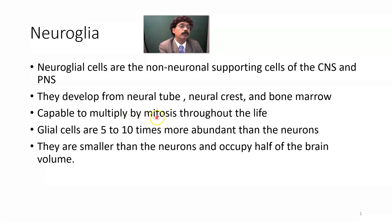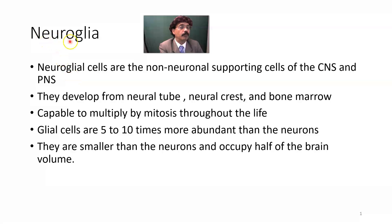Neuroglial cells may undergo cancer or tumor formation, such as astrocytoma, oligodendroglioma, or glioblastoma. So cancer develops from the neuroglial cell. Neuronal cells do not go through mitosis, so they do not undergo cancer formation. It is the multiplication of the neuroglial cell that causes the formation of brain tumors.